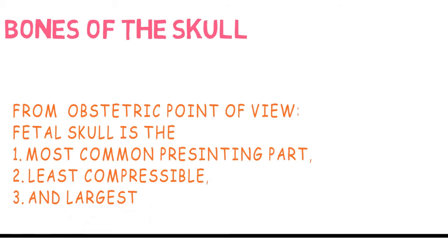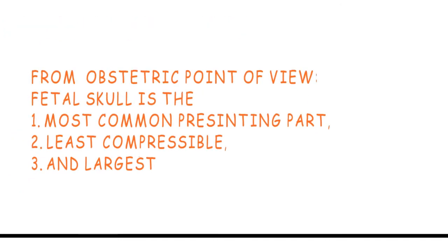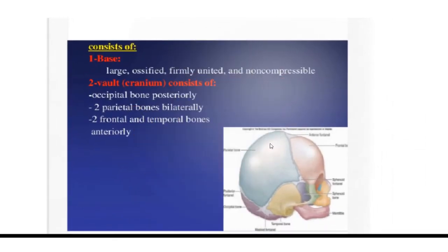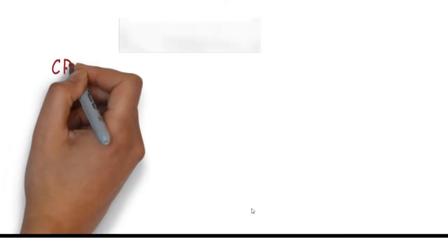The fetal skull consists of a base and a vault. What you see in this picture is the vault. The base exists inside, separating the brain from the neck. The vault consists of the frontal bone, the right and left parietal bones, a single occipital bone, and the temporal bones. These are separated by sutures and form the fontanelles — the anterior and posterior fontanelle. The frontal, parietal, and occipital bones form the vault of the skull.